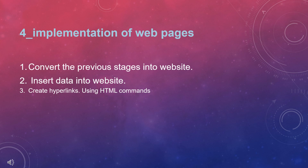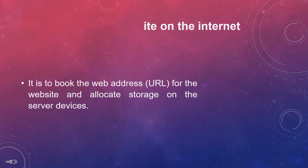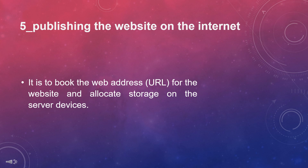Stage four — implementation of web pages: convert the previous stages into a website, insert data into the website, and create hyperlinks using HTML commands. Stage five — publishing the website on the internet: this involves booking the web address URL for the website and allocating storage space on the server.